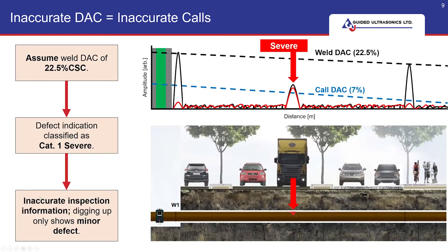Now, let us assume we are inspecting an inaccessible road crossing pipe. Assuming that the welds on this pipe are not 22.5%, then the deck curves that are set would be inaccurate. In this case, we detected an indication of a defect, and it will be misclassified as a severe defect due to the inaccurate deck.